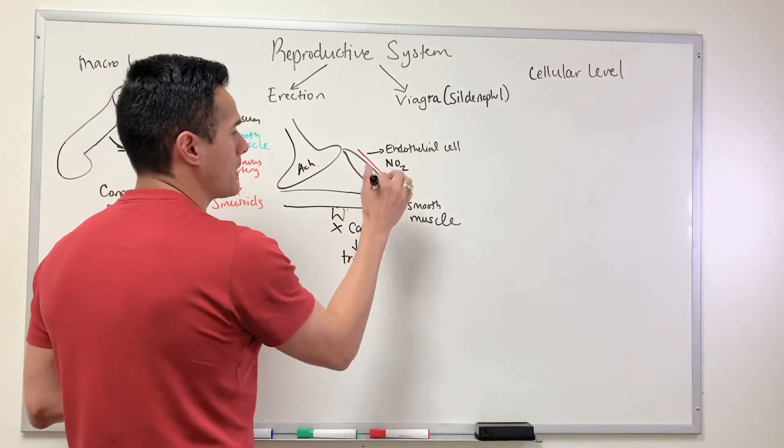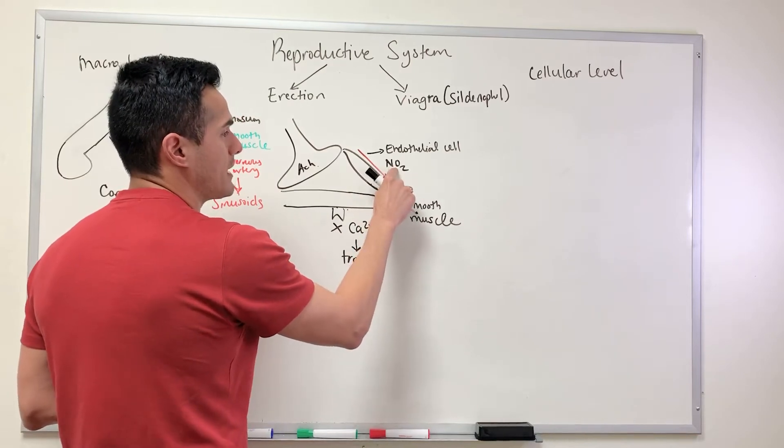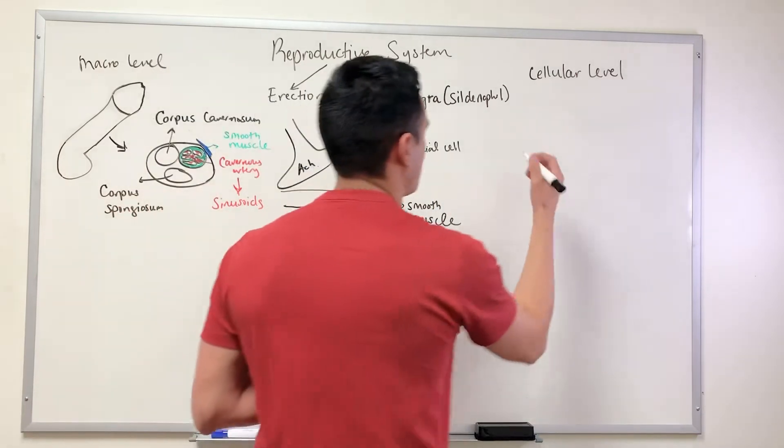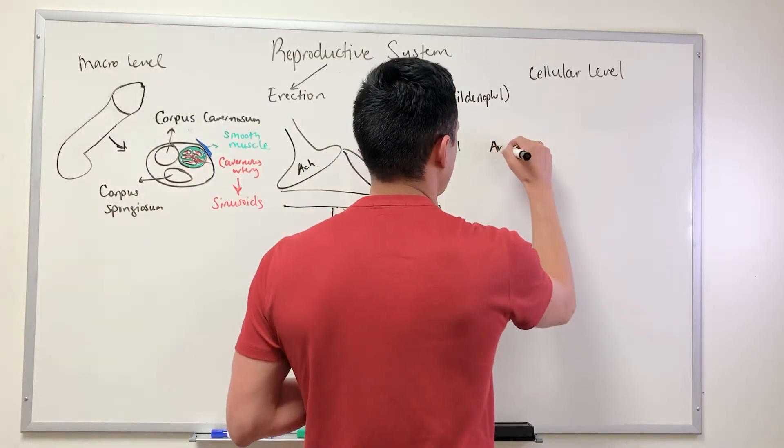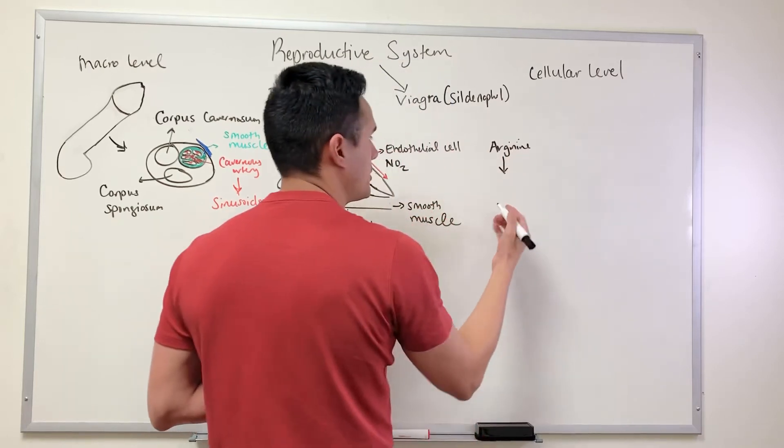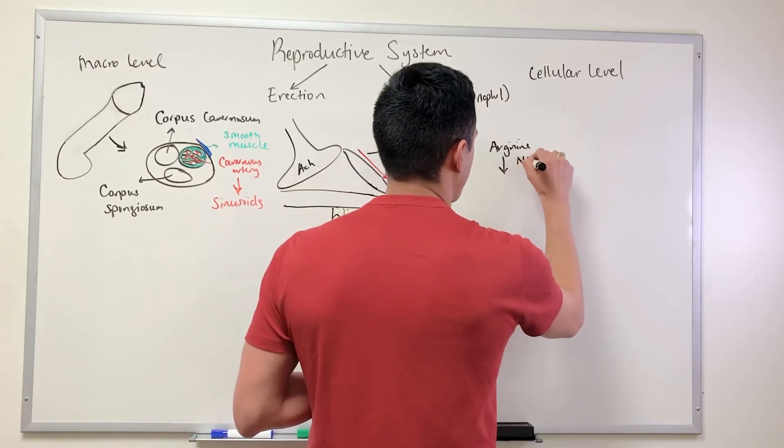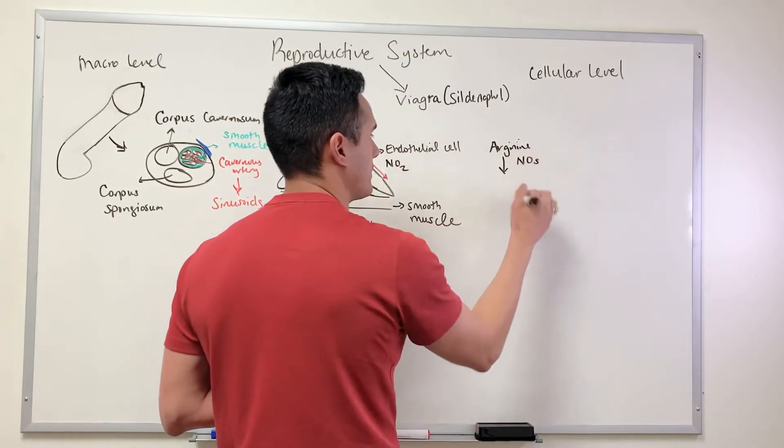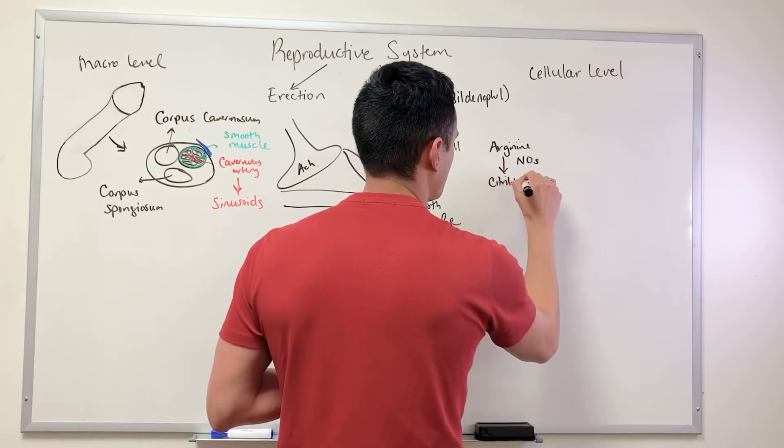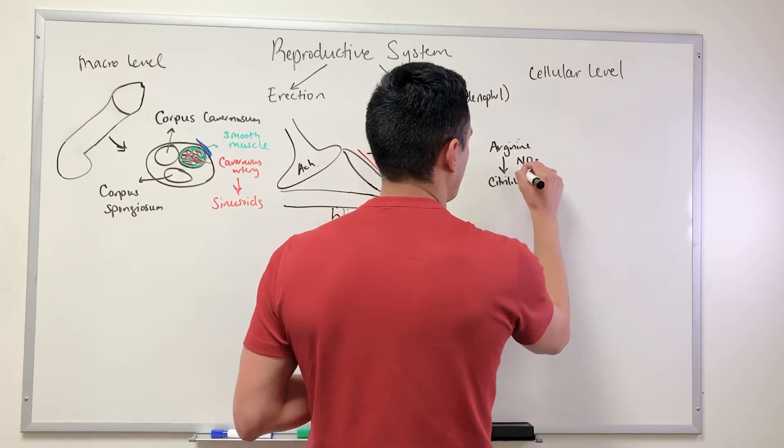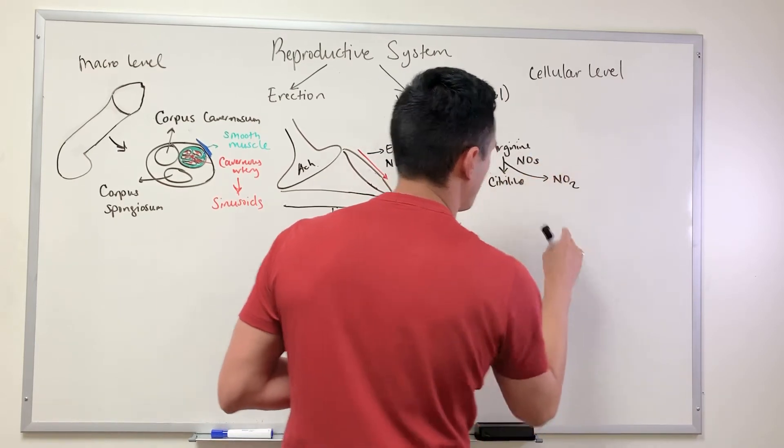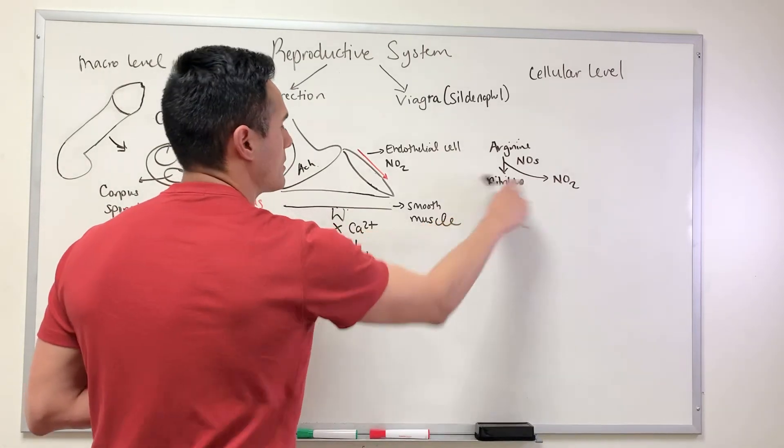How are we able to synthesize this? We use an amino acid known as arginine. We use arginine and then nitric oxide synthase. We're synthesizing nitric oxide and we form citrulline, and this is where we get our production of NO.